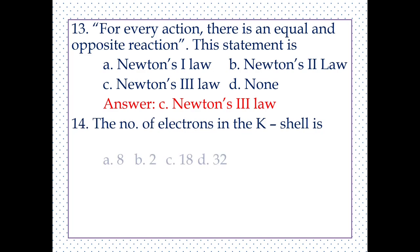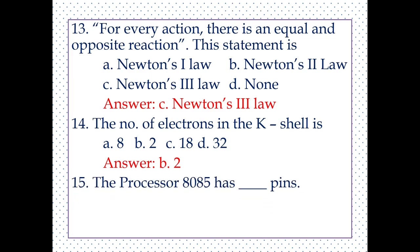The number of electrons in the K shell is 2, which can be easily found using the formula 2n². For the K shell, n = 1. Substituting that, you will get 2. The microprocessor 8085 has 40 pins.